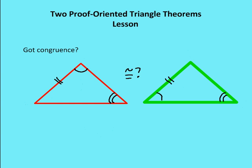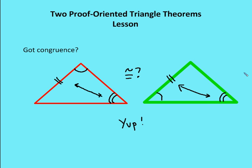Last one: do I have congruence here? Yes, I do. I have angle, angle, and a side — a side that's not included between the two angles, so angle-angle-side. I have two angles that are congruent and a non-included side. When I look at the congruent side, it is opposite the same angle in question. So these two triangles are congruent by angle-angle-side.